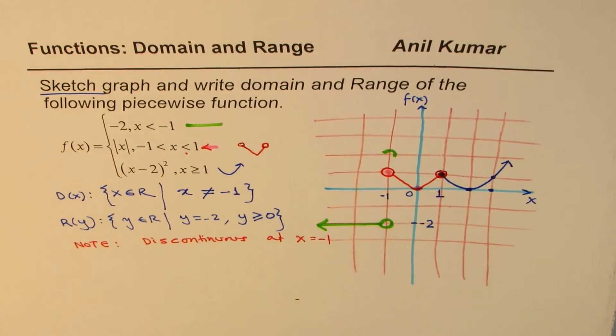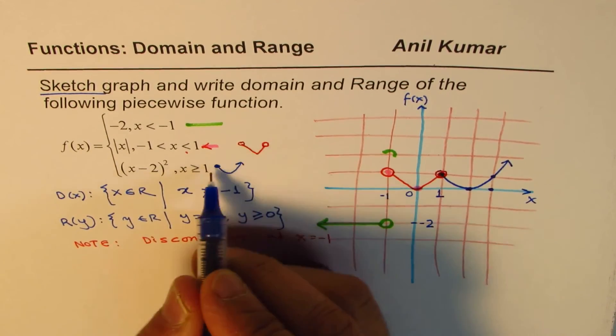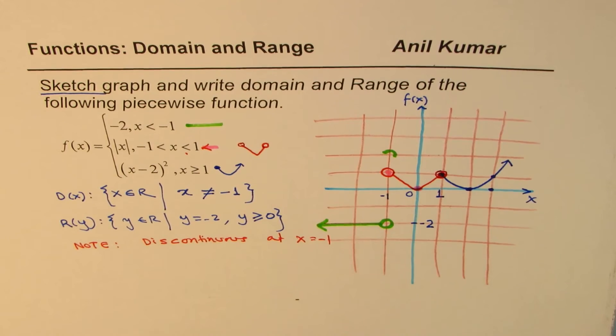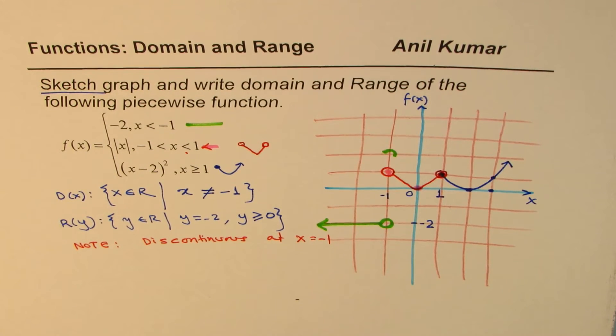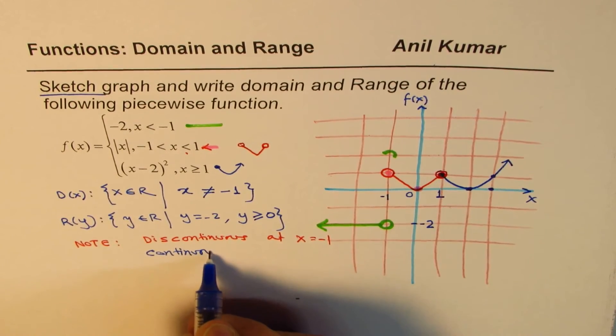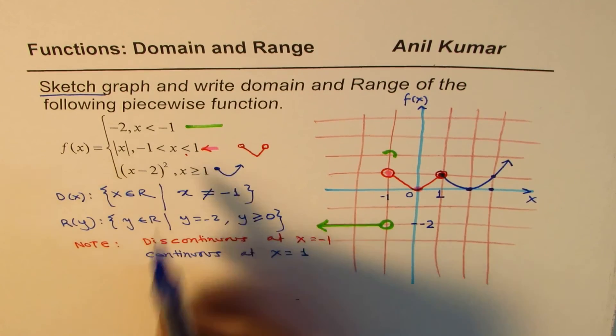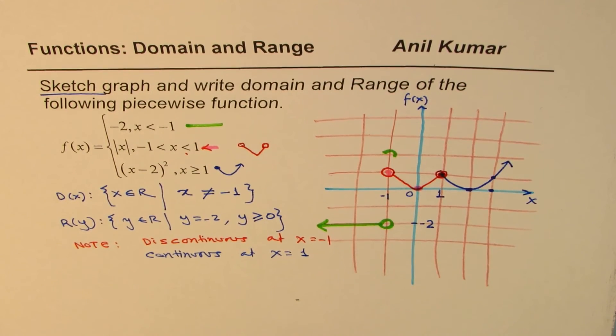However, with this parabola, we have greater than or equal to. So that fills up and makes this piecewise function continuous at x equals to 1. So we can say it is continuous at x equals to 1. Since the third piece overlapped at 1 for the second piece.